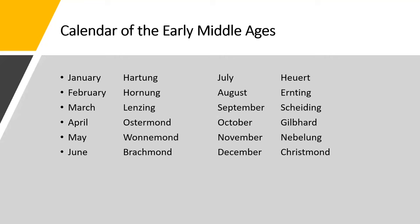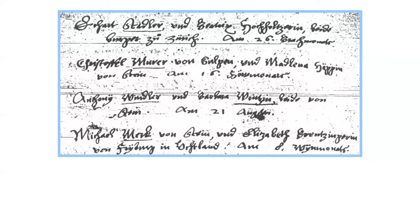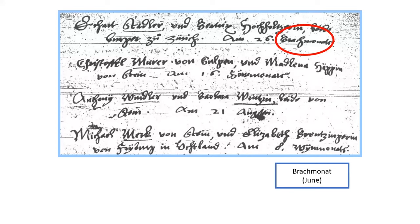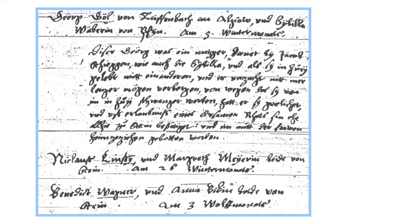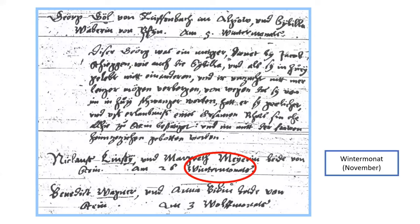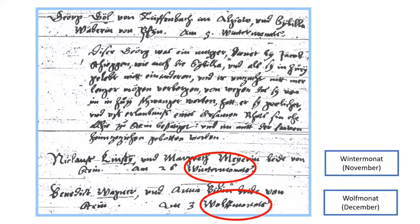Calendar of the Early Middle Ages. This calendar was often used in German church records in the 1700s and 1800s. This record shows two of these early Middle Ages dates: Brachmonat, which was June, and Hoyinmonat, or July. In this Swiss record, there are different months for November and December — Vintermonat was November, and Wolfmonat was December, the time of the year wolves would come into villages looking for food.